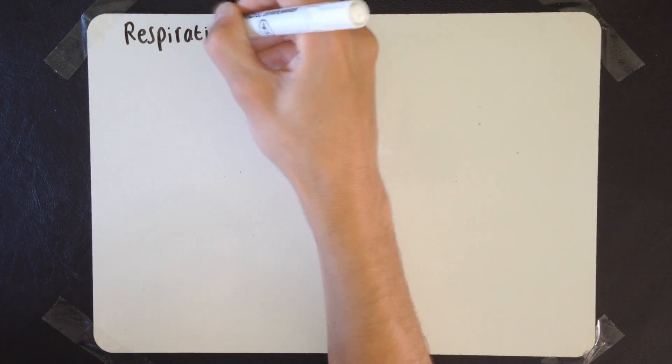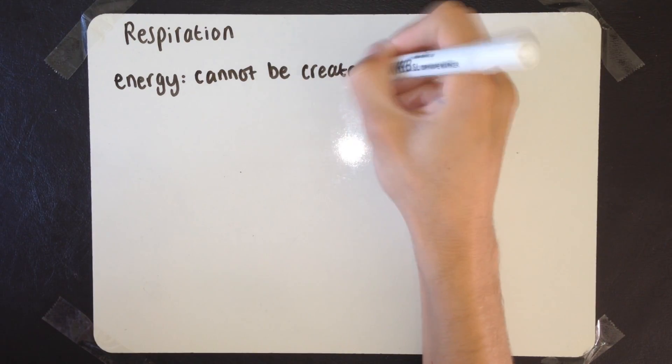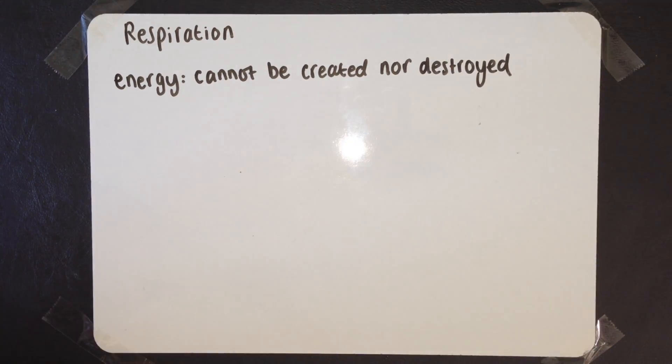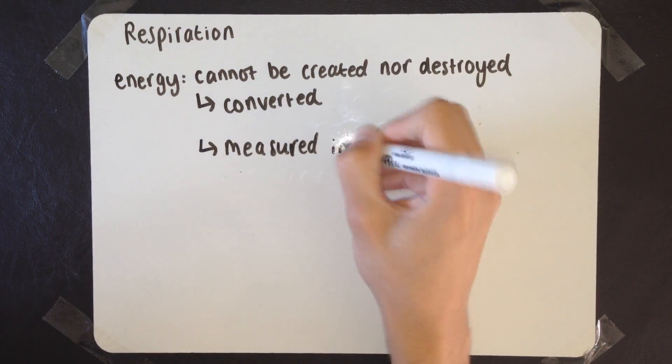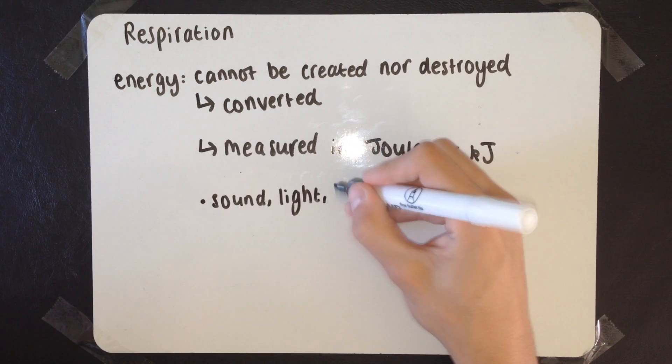In this video, I'm going to be looking at aerobic respiration. First off, we're going to start with energy. Energy cannot be created, nor can it be destroyed. Energy can only be converted to different physical forms, like sound, light, heat, kinetic, all sorts. It's measured in joules or kilojoules.